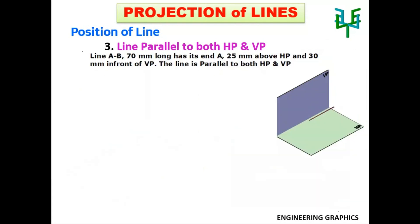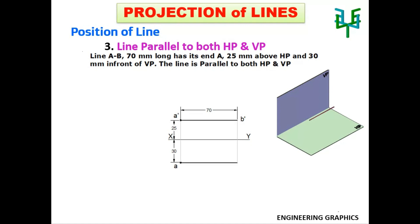Let us take a problem: A line, 70mm long, has its end A 25mm above HP and 30mm in front of VP, and the line is parallel to both HP and VP. Draw an XY line and fix a point A-dash 25mm above the XY line. Through A-dash, draw a line parallel to the XY line for a length of 70mm — the other end is B-dash. Draw projectors from A-dash and fix the plan end point A 30mm from the XY line. Draw a projector from B-dash, then draw a horizontal line through A up to the projector from B-dash — this intersection point is B.